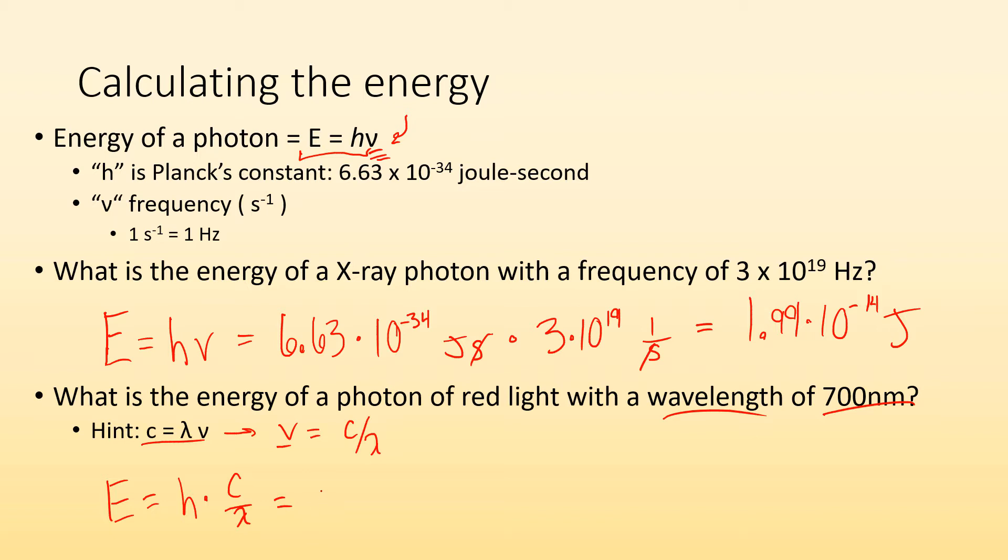I got 6.63 times 10 to negative 34 joules second times 3.0 times 10 to the eighth meters per second for the speed of light divided by the wavelength, which is 700 times, remember nano means 10 to the minus nine, so 700 times 10 to the minus nine meters. My meters cancel out. My seconds cancel out and I'm left with just joules. So let me plug and chug and I get 2.84 times 10 to the negative 19 joules. That's how you do that math.